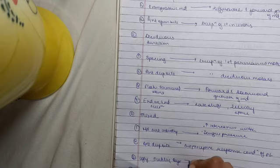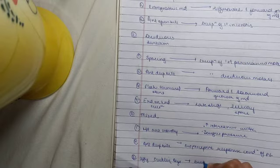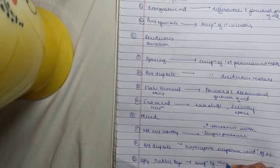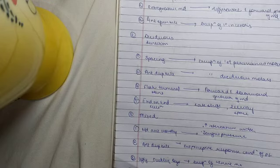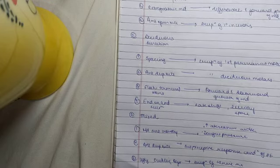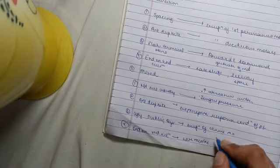Then, ugly duckling stage by eruption of canine, maxillary canine. End-on-end relationship is corrected by the late mesial shift.